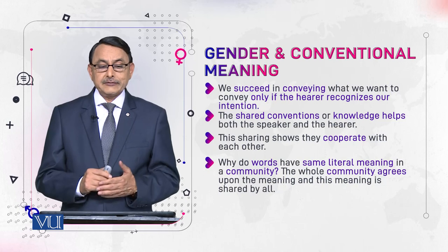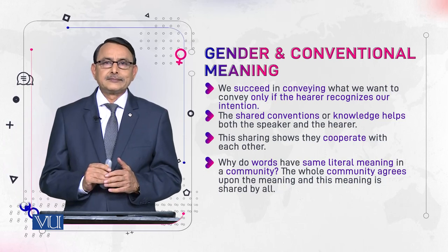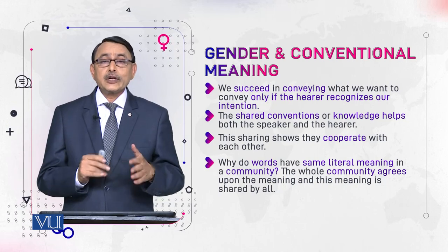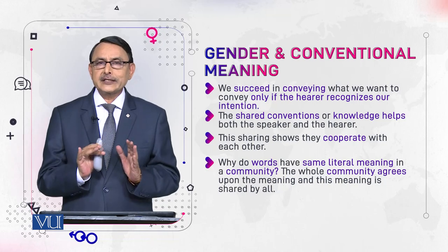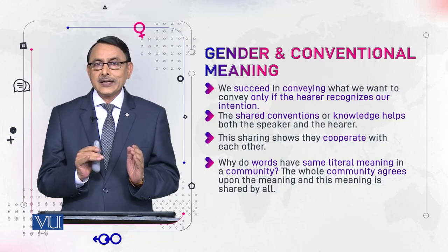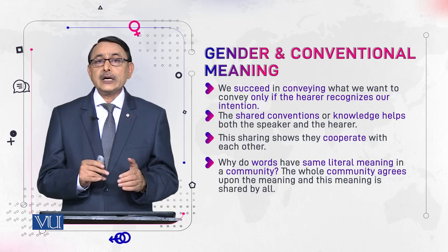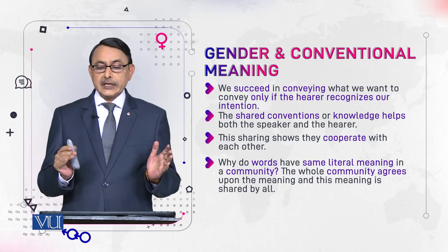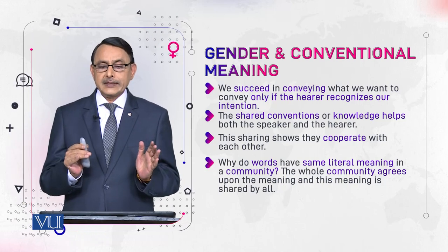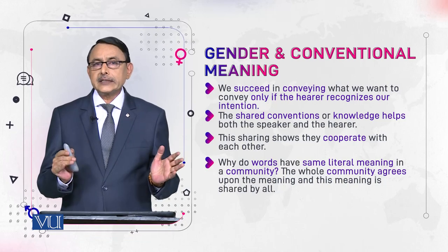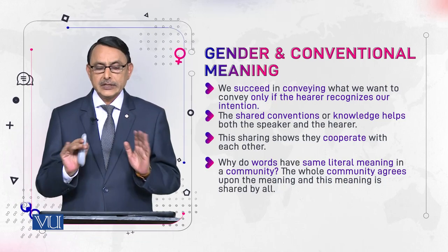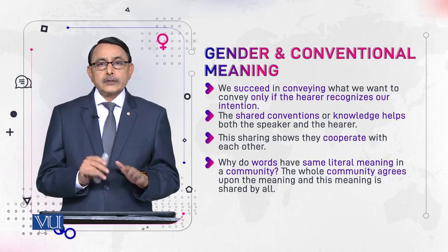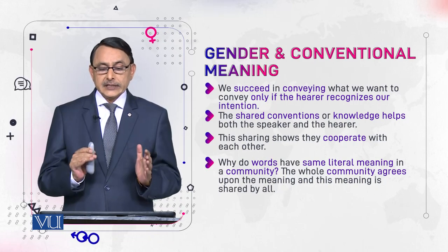Now we relate it with gender. We succeed in conveying what we want to convey, but how can we assume that the addressee would recognize our intention? How are we successful in this assumption? We succeed in conveying what we want to convey only if the hearer recognizes our intention. The question arises: how does he or she recognize it?